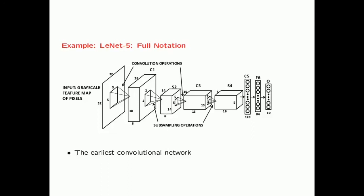The output layer is a softmax with 10 possibilities, since the network was recognizing digits 0 through 9. There were also some differences in how RBF units were used for the objective function. Overall, the basic structure of LeNet-5 is very similar to modern neural networks — the main difference is that modern neural networks are far deeper, have many more layers, and are trained with far more data, which explains their success.